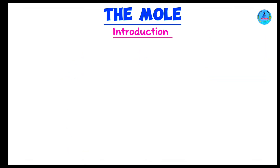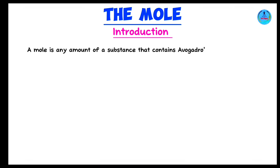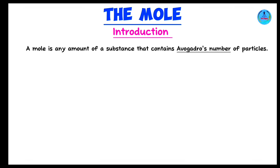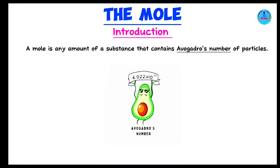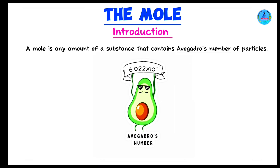So, number one: what is the mole? A mole is any amount of a substance that contains Avogadro's number of particles, which is 6.023 × 10²³.